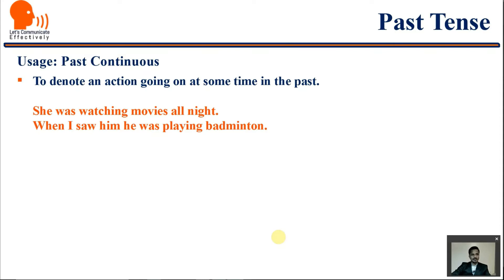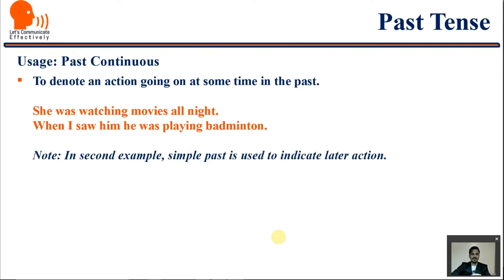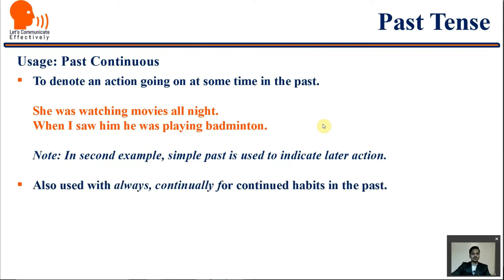'When I saw him, he was playing badminton.' Note one important thing here: when two aspects of past tense come together, simple past is used to indicate the latter action and past continuous to indicate the earlier ongoing action. The playing of badminton was already going on, and then I saw him — so 'I saw' is the latter action, and 'he was playing' is the first action.